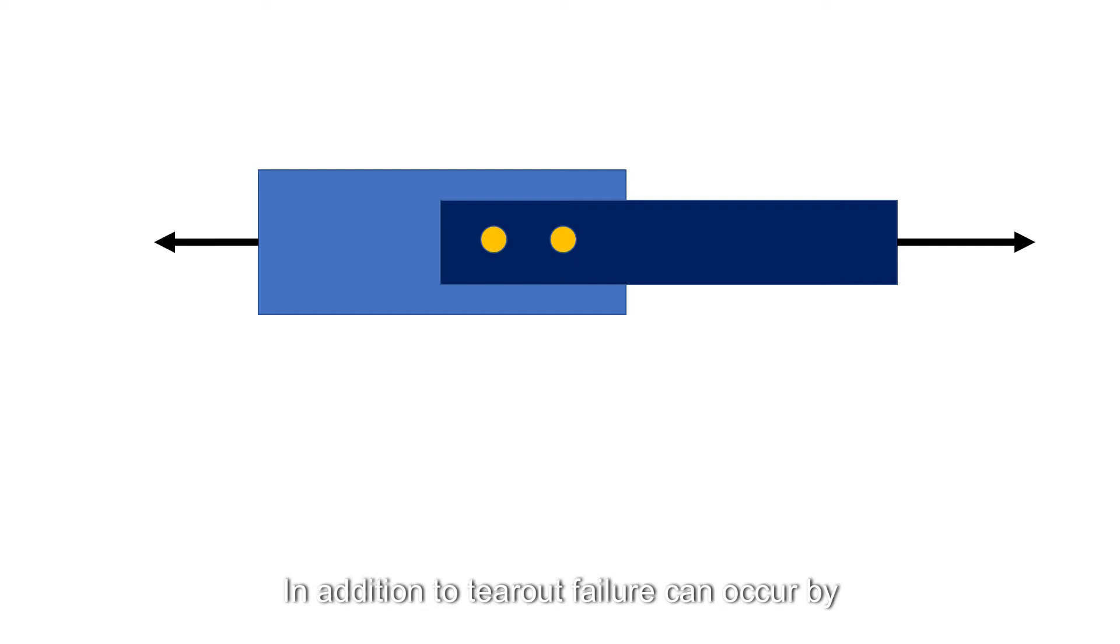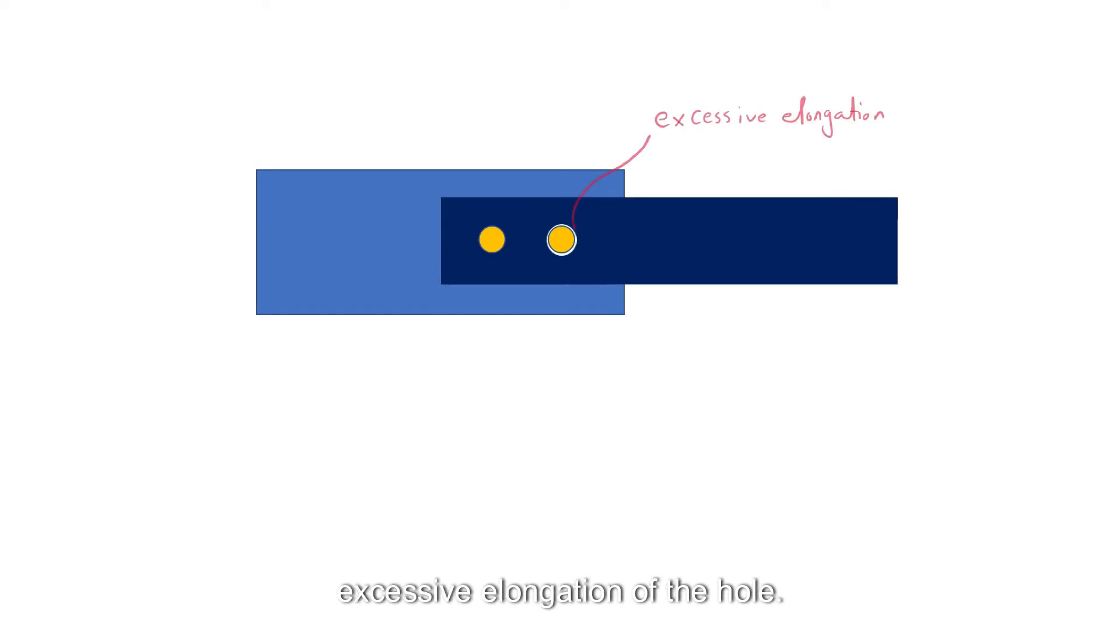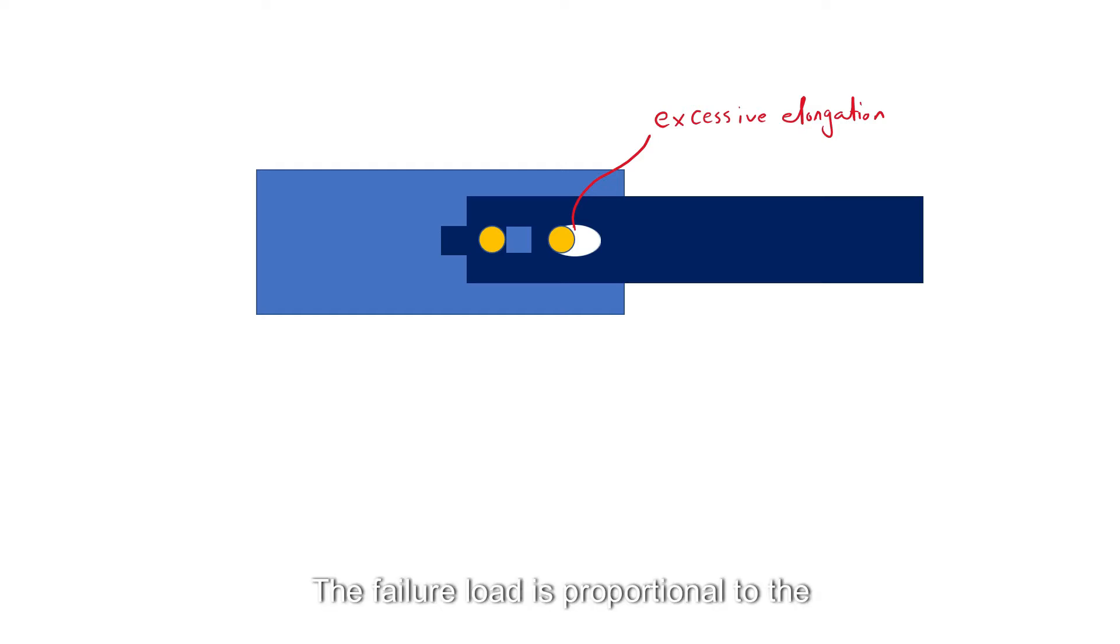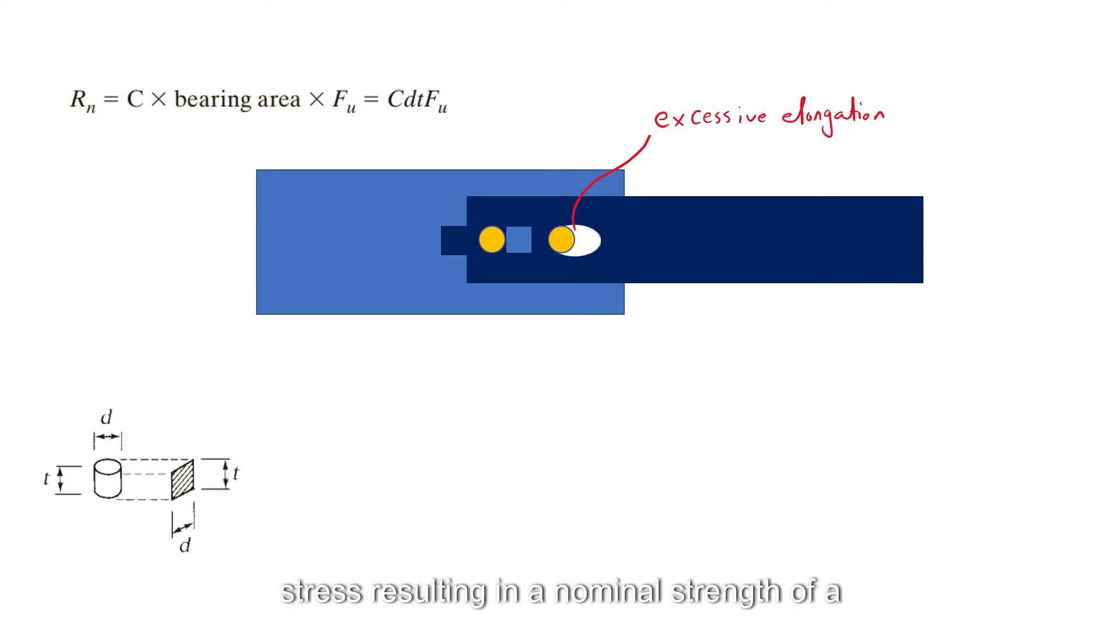The tear-out can take place in either of the connected parts, either at the edges or between the bolts. In addition to tear-out, failure can occur by excessive elongation of the hole. The failure load is proportional to the projected bolt bearing area times the rupture stress, resulting in a nominal strength of a constant C multiplied by the bearing area multiplied by the ultimate strength of the weaker connected part.